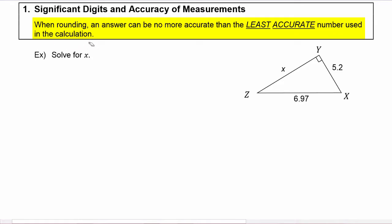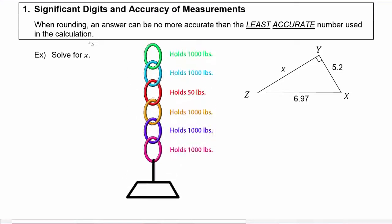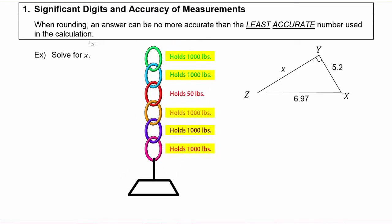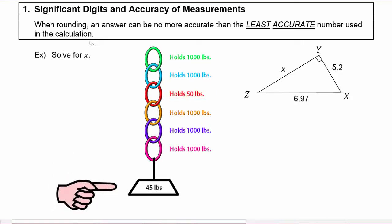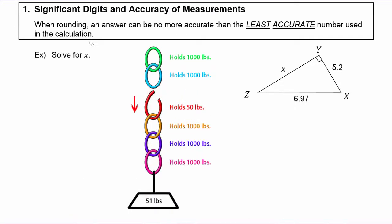So accuracy only gets worse as you go on calculating; it can't get better. This is similar to a chain—maybe you've heard the expression a chain is only as strong as its weakest link. If you have a chain with six links and five would each hold a thousand pounds but one only holds fifty pounds, then that chain is going to break the minute you put something on there that weighs 51 pounds, even though the rest of the links could hold a thousand pounds each.